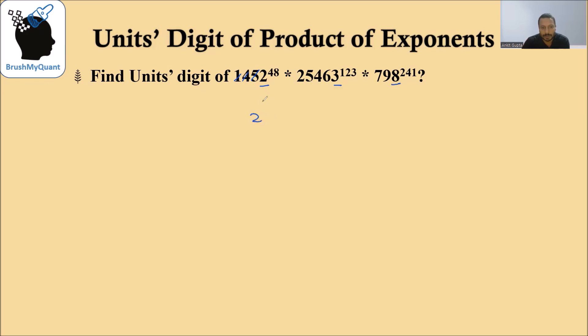So this means this question is nothing but what is the units digit of 2 raised to 48 multiplied by 3 raised to 123 multiplied by 8 raised to 241. Now we can simplify this and start solving.